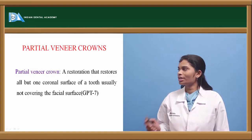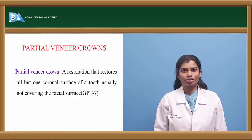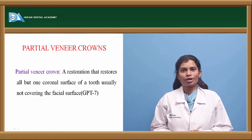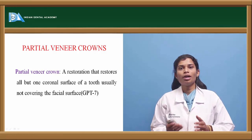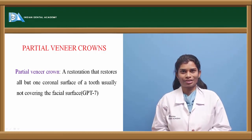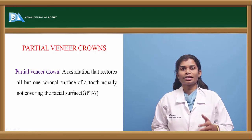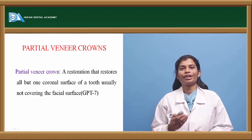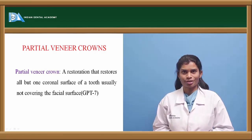A partial veneer restoration is a type of restoration where it covers all but one coronal tooth surface — specifically either the buccal or the facial surface.